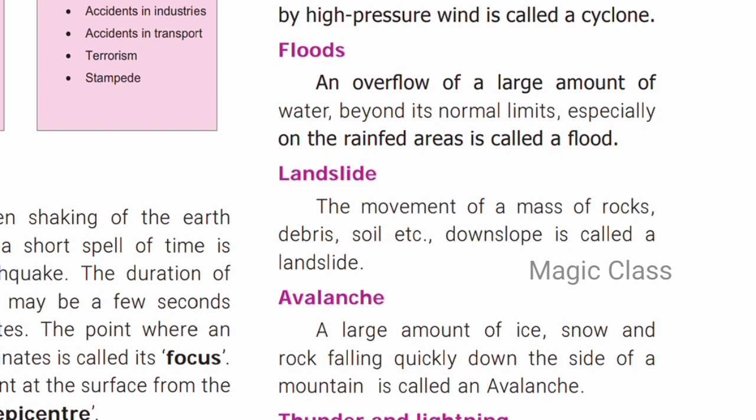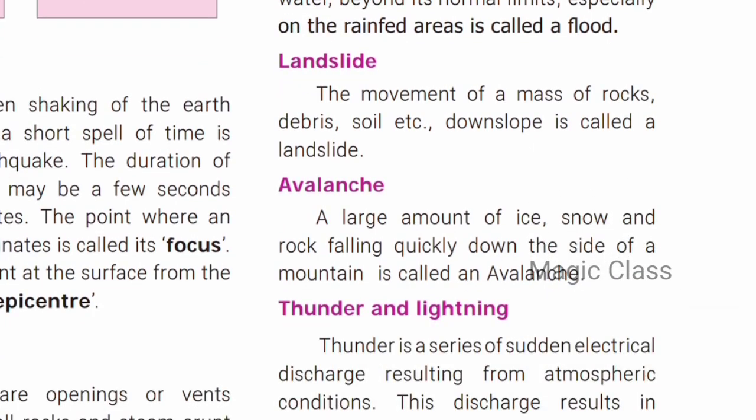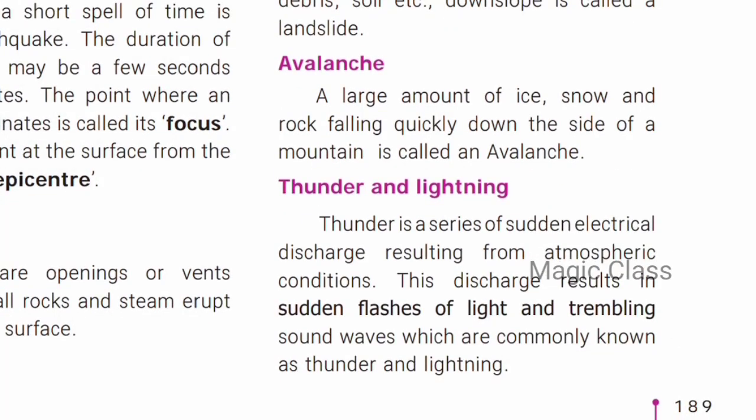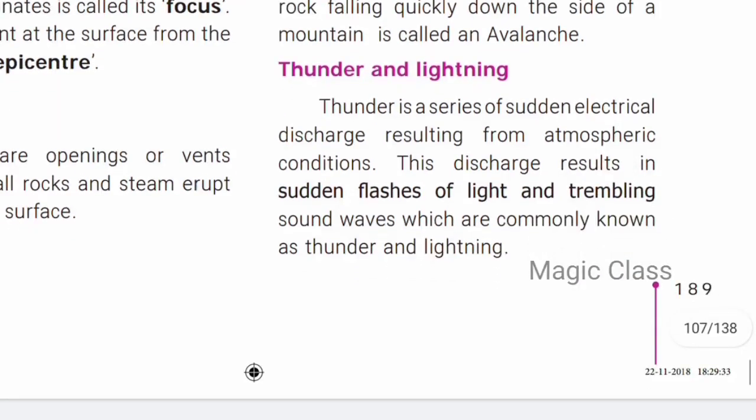Next is a landslide. A landslide is the movement of a mass of rocks, debris, and soil down a slope. An avalanche is similar to a landslide — a large amount of ice, snow, and rock falling down quickly along the side of a mountain.